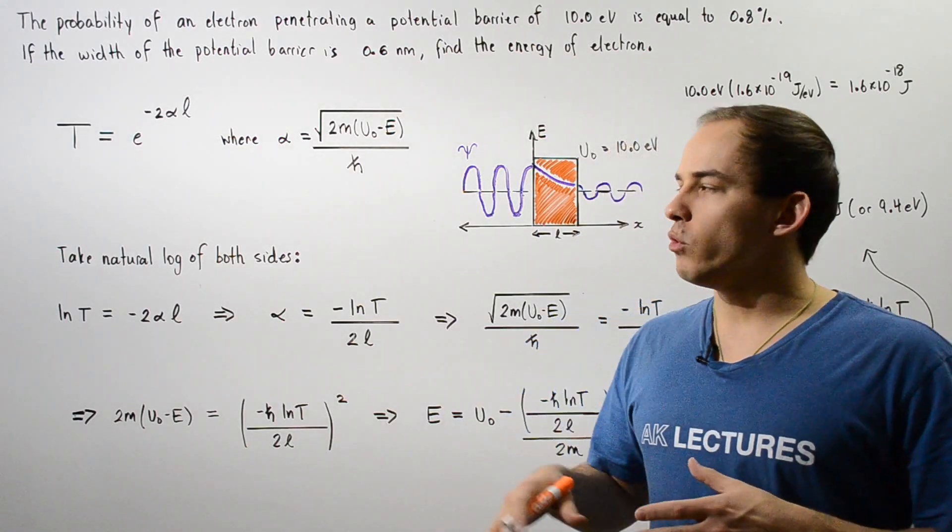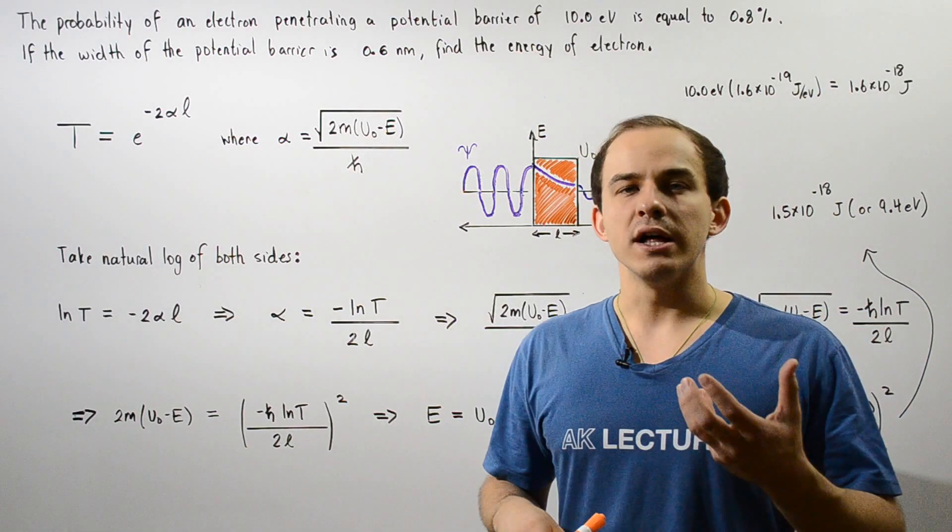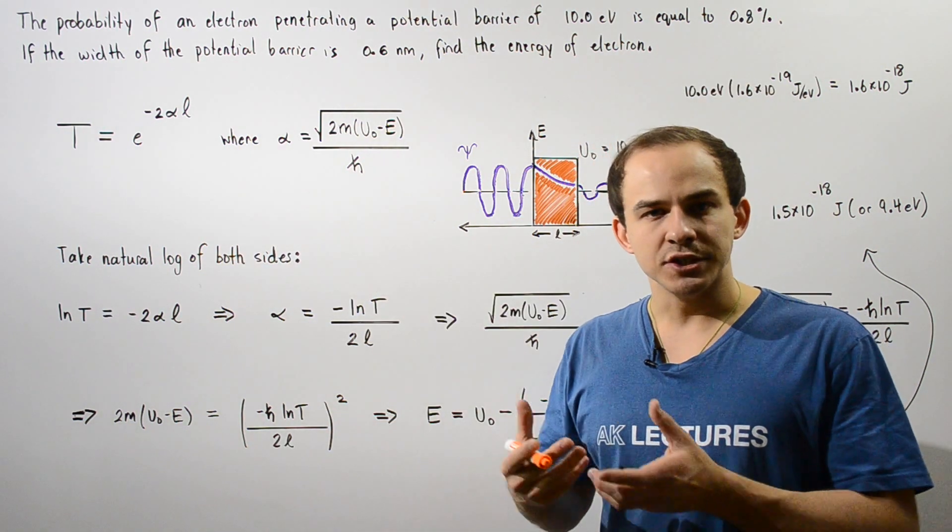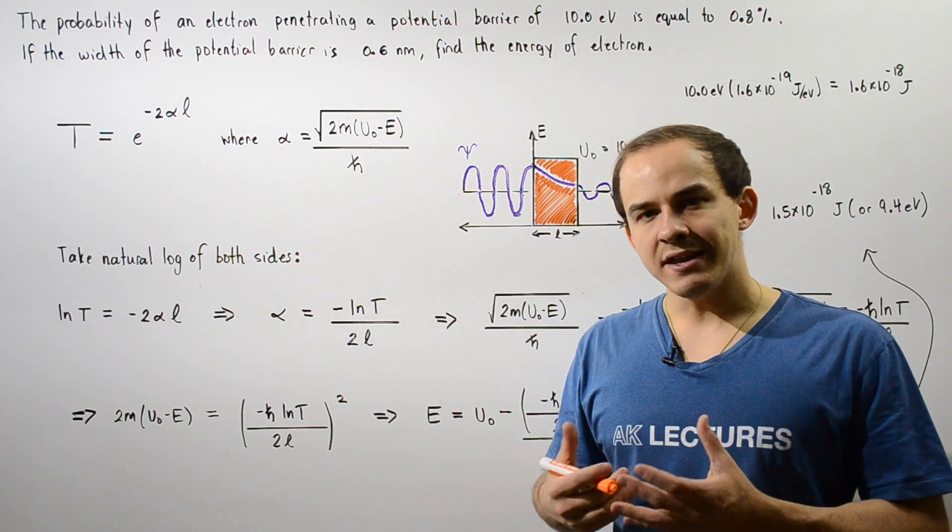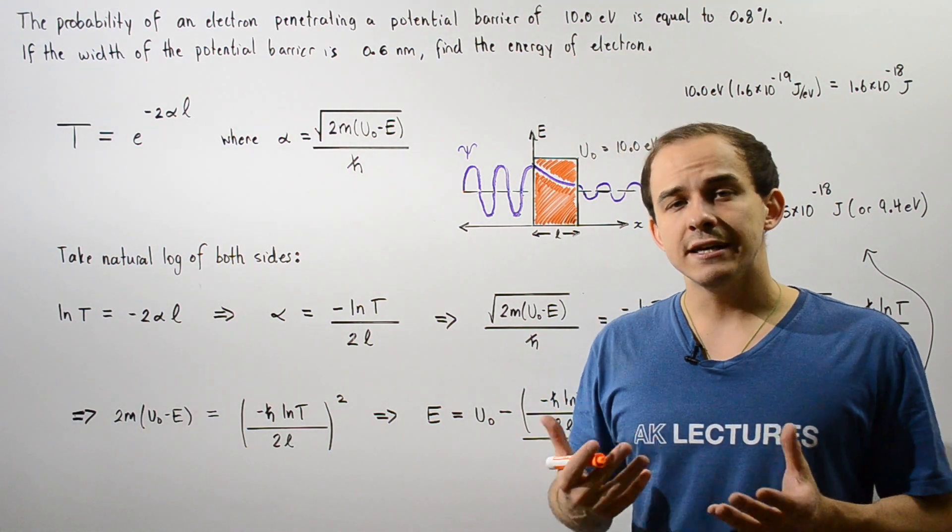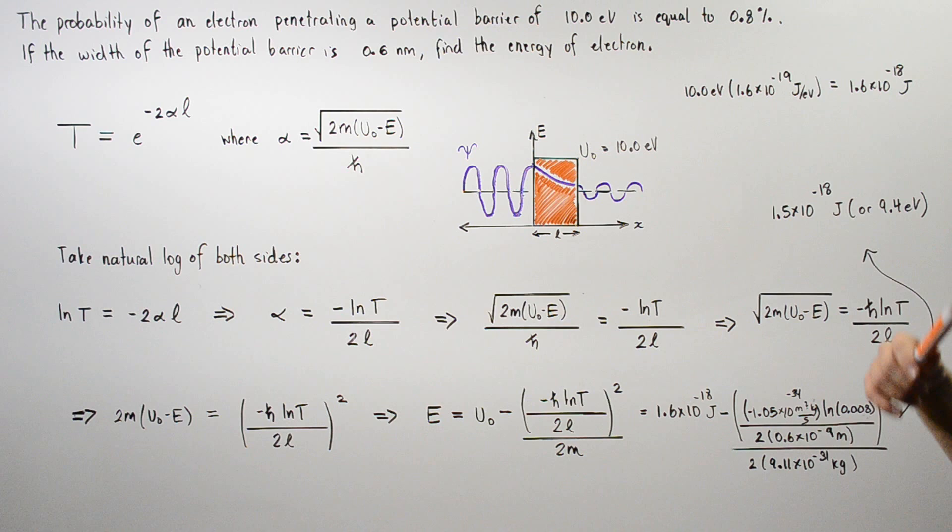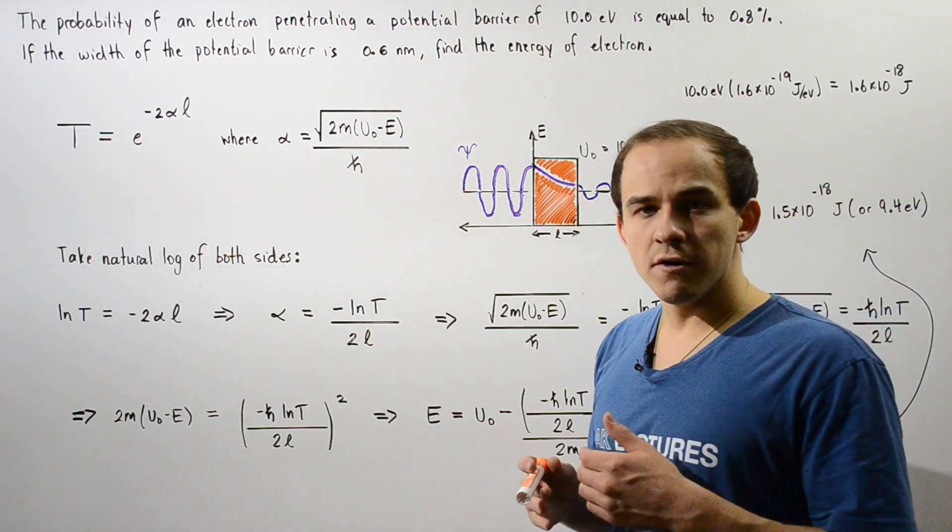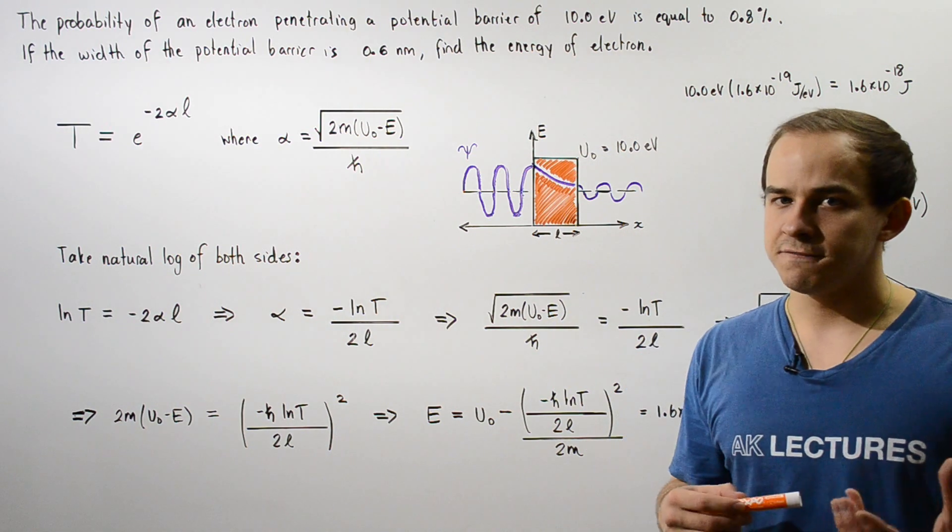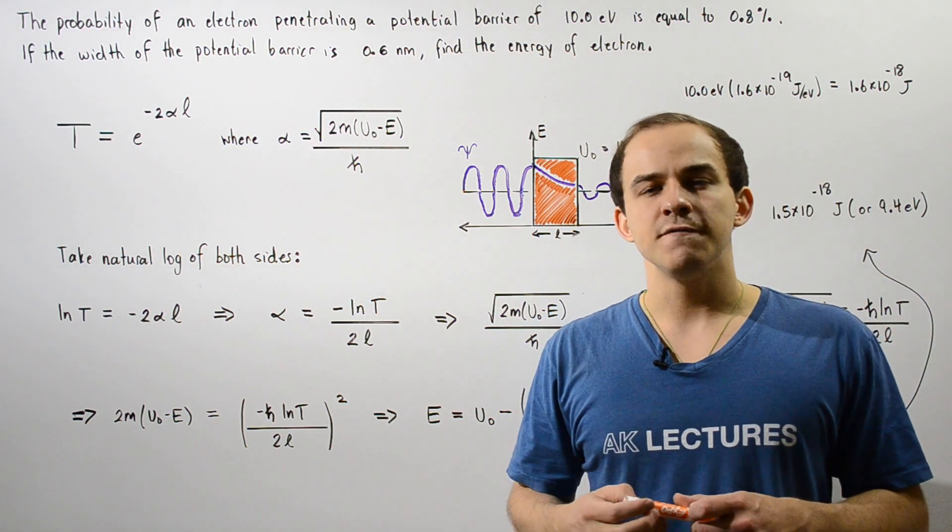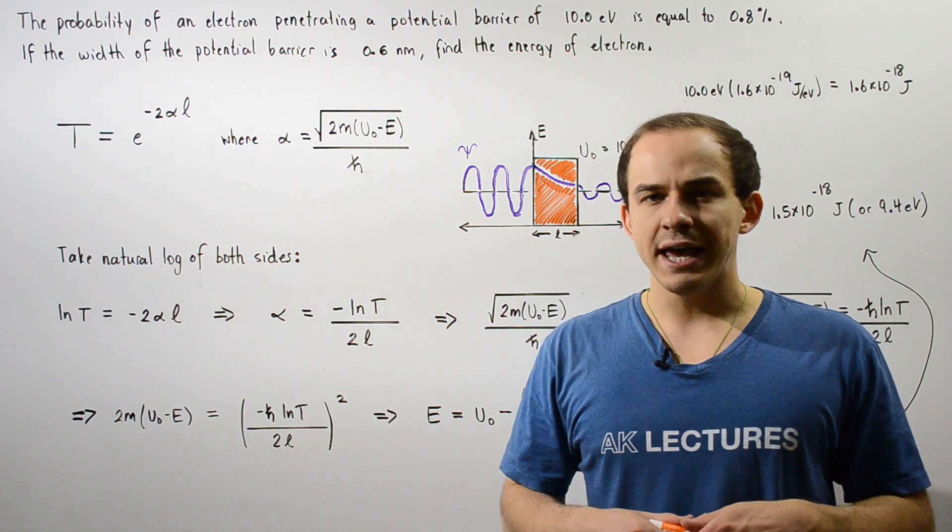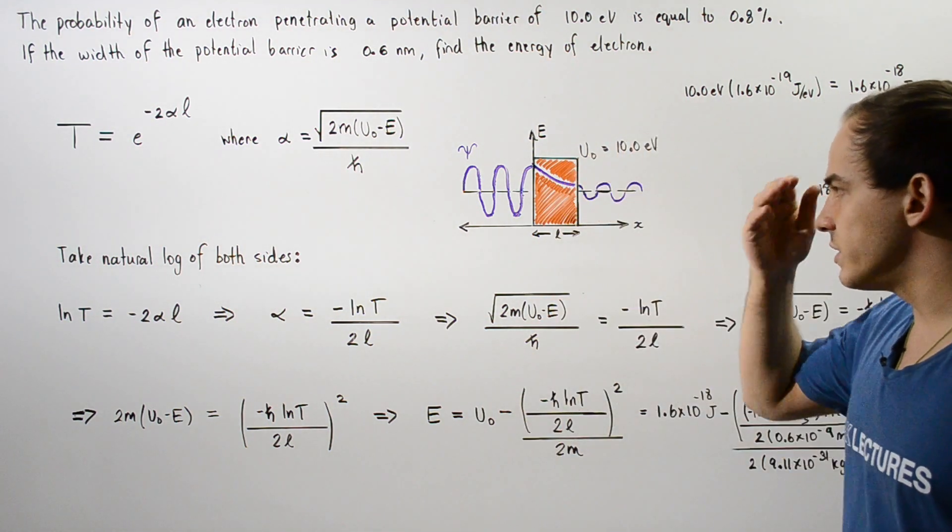Let's examine the following example that deals with quantum tunneling. The probability of a certain electron actually penetrating a potential barrier of 10 electron volts is given by 0.8%. If the width of this potential barrier is 0.6 nanometers, we want to find the total energy of our electron. Let's look at the following diagram.